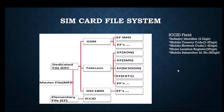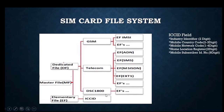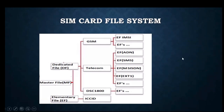As part of the Dedicated Files, we have GSM, Telecom, and DSC1800. The GSM and DSC1800 files identify network-related information, so by using these we can get network-related details. The Telecom file provides service-related information supplied by the service provider.